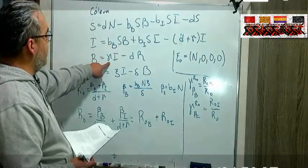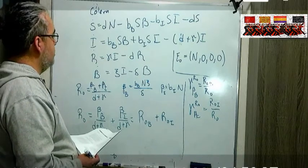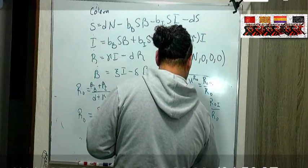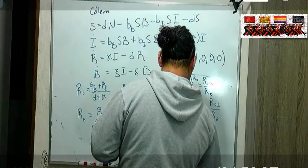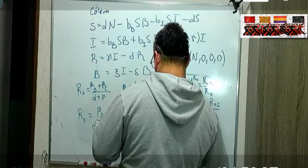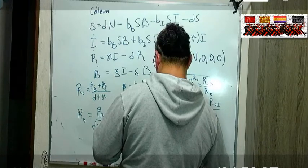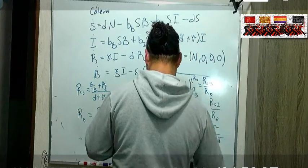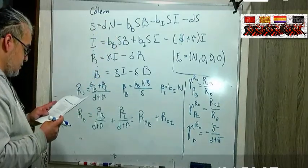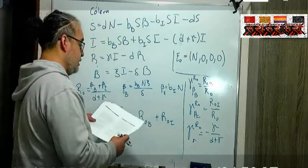Qué otro parámetro nos podría importar, pues esta gama, la tasa de remoción. Entonces qué tanto afecta a R0 el cambio en la gama esta chiquita. Este es como menos gama I sobre delta más gama, y ahí va a depender de cada uno de los parámetros.